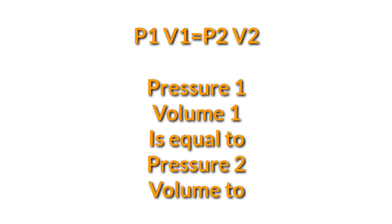The formula of Boyle's Law is P1 V1 equals P2 V2, meaning pressure 1 times volume 1 is equal to pressure 2 times volume 2. I will discuss furthermore about the formula.